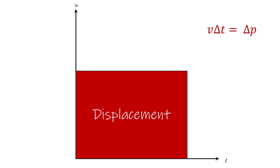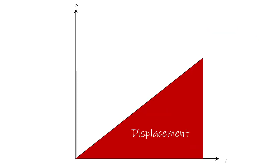Recall that we rearranged our equation so that velocity times change in time equals change in position. This is just the area of a rectangle — base times height — where the height is velocity and the base is the change in time. This is only appropriate if velocity is constant. If velocity isn't constant, we're looking at the area under a curve rather than a simple rectangle. The key takeaway is that displacement is the area under the velocity-time curve.